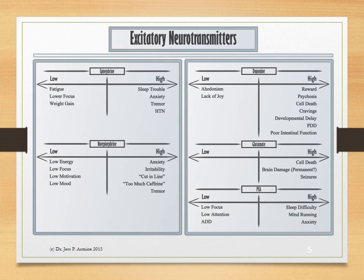On this slide, we see the excitatory neurotransmitters: epinephrine and norepinephrine, or adrenaline and noradrenaline, dopamine, glutamate, and phenylethylamine. Epinephrine and norepinephrine are excreted by the adrenal gland, otherwise known as your stress gland. And as you can see, if they're too high, you may have trouble sleeping, anxiety, tremors, or irritability.